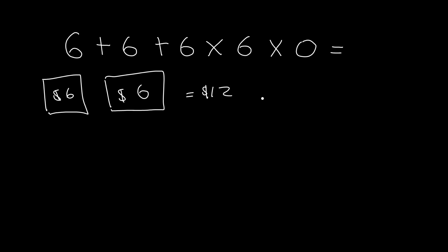Then someone says, Oh wait, I'll give you six items, but they're all free. So that's 6 times 6 times 0 equals $0.